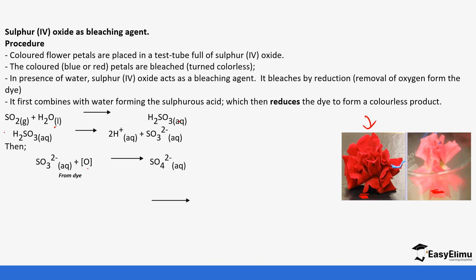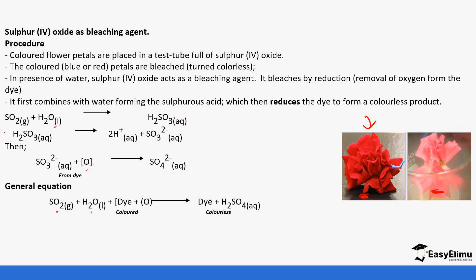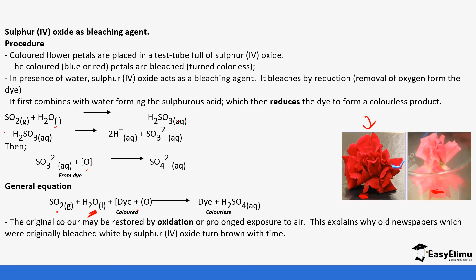The sulfite ions react with the oxygen in the dye, taking away that oxygen to form sulfate ions — so the sulfite is being oxidized, and in turn it is reducing the dye. The general equation is: sulfur dioxide plus water plus the dye forms sulfuric acid (H₂SO₄) plus a colorless product. The original color may be restored by oxidation — the petals have lost their oxygen but can be restored if exposed to air for prolonged time.